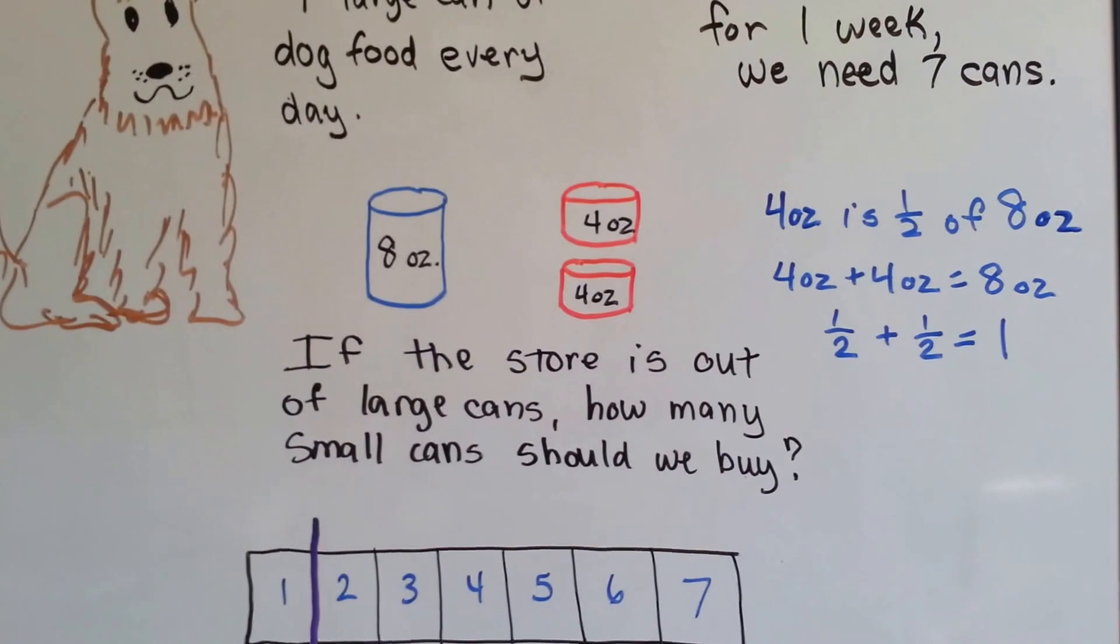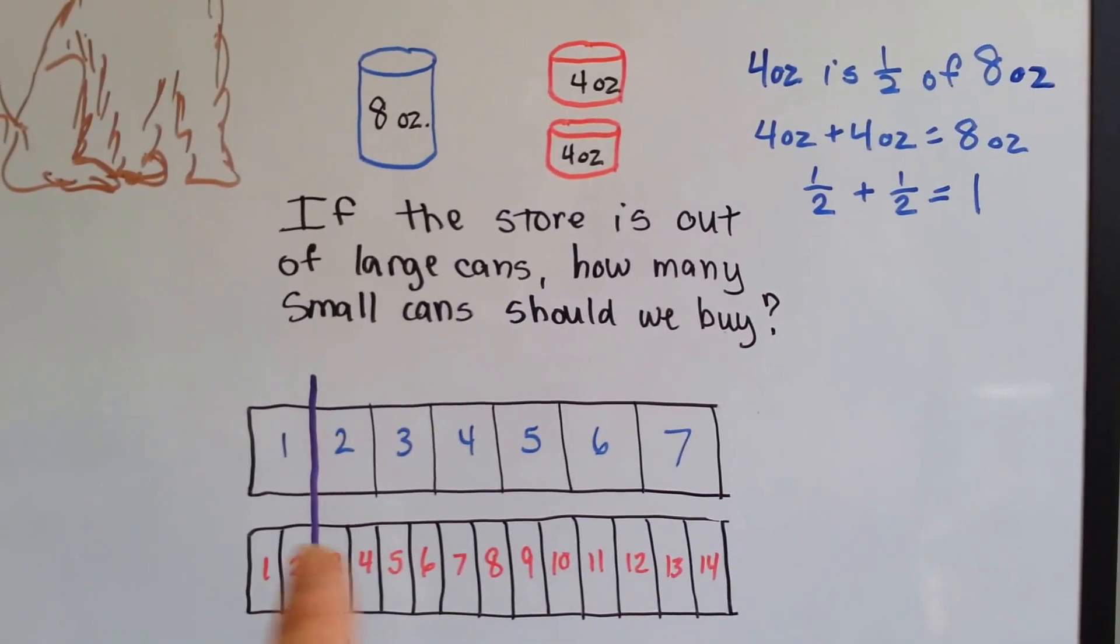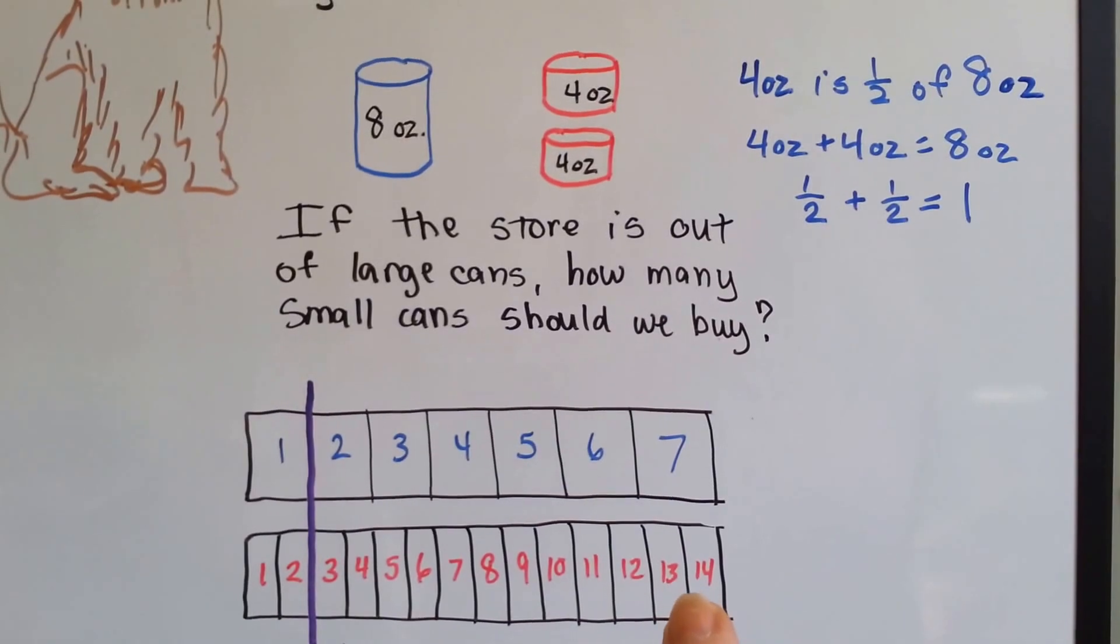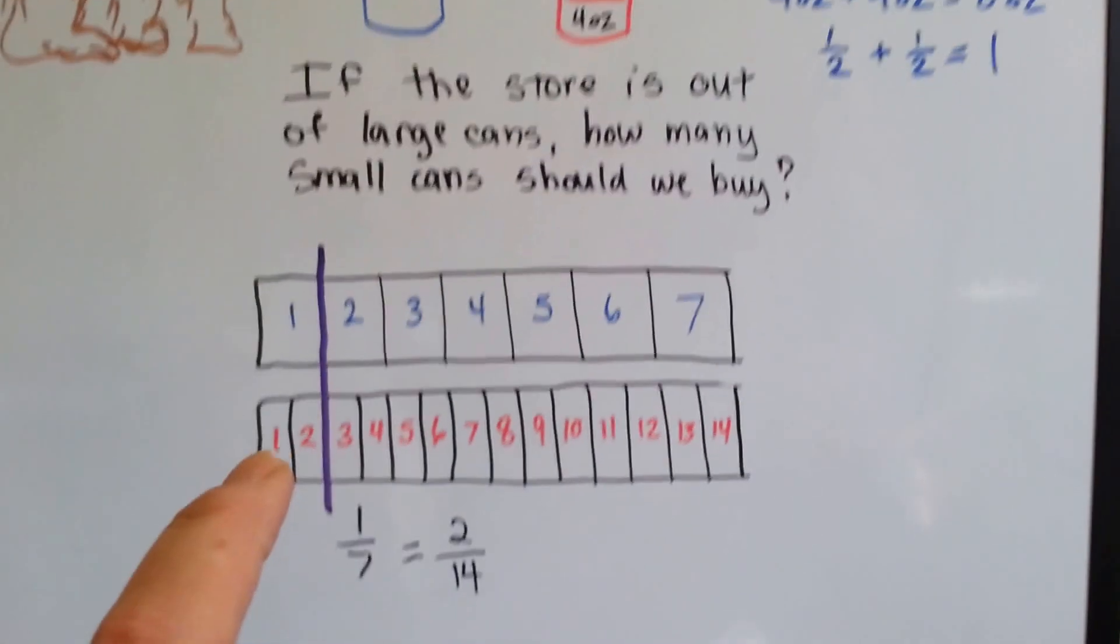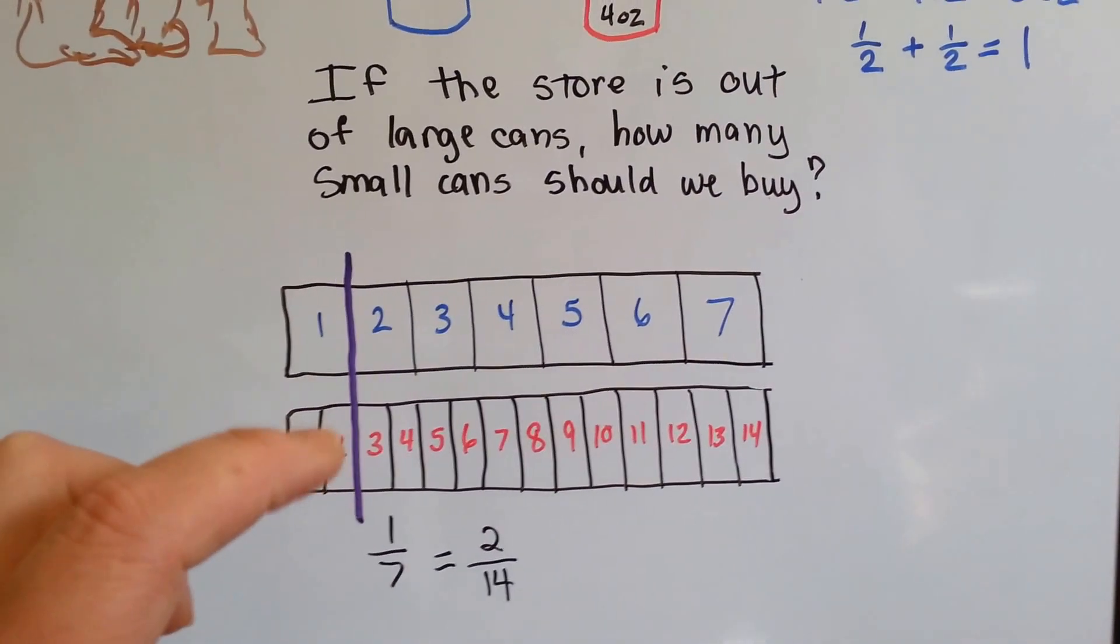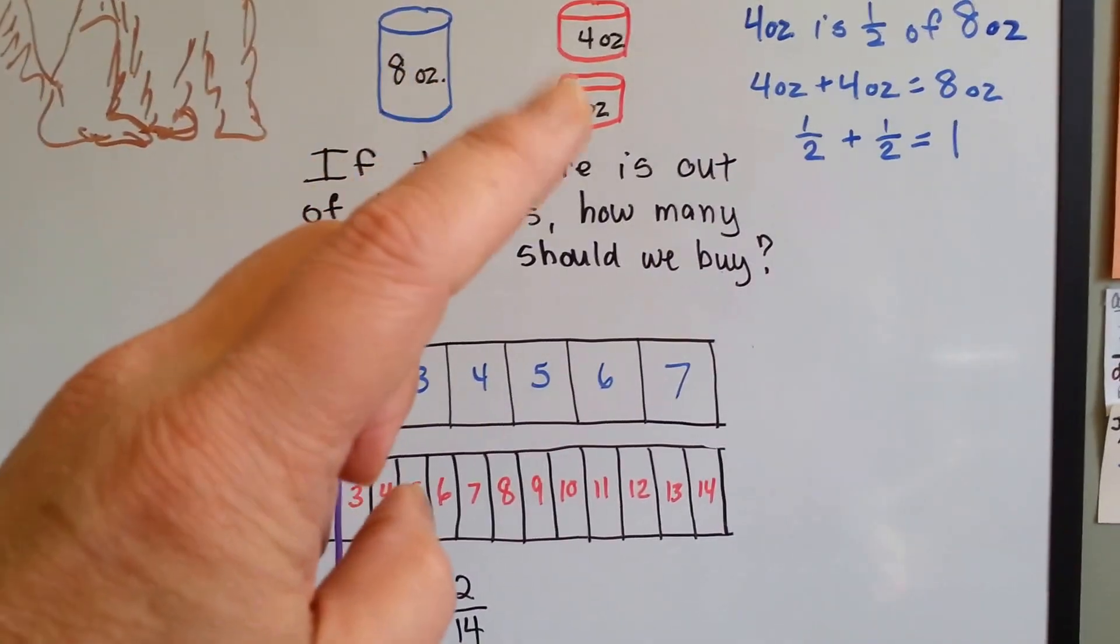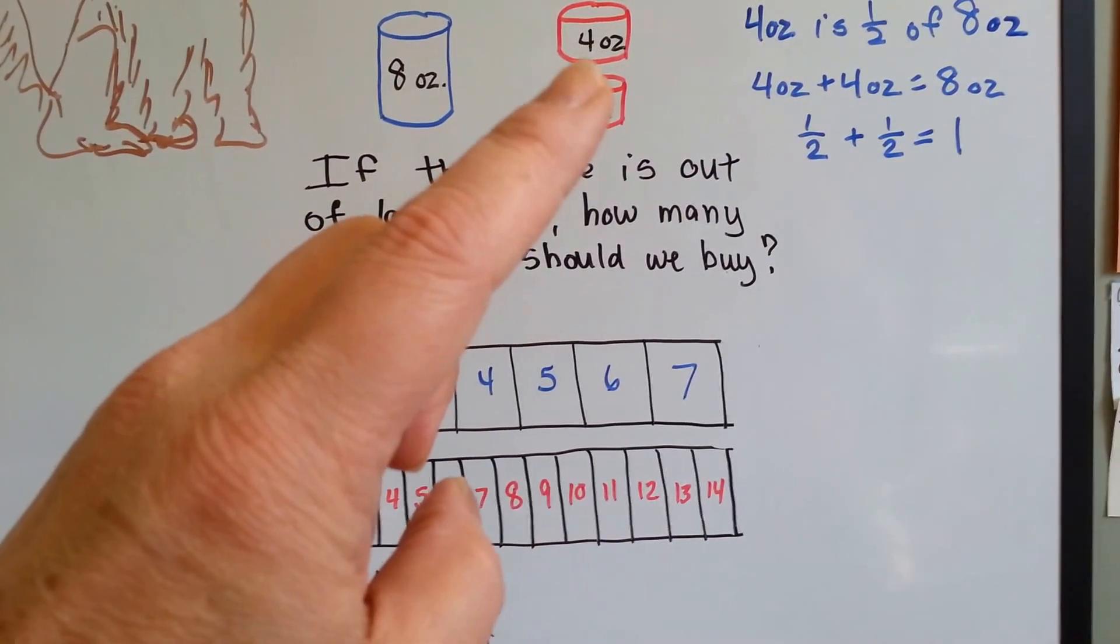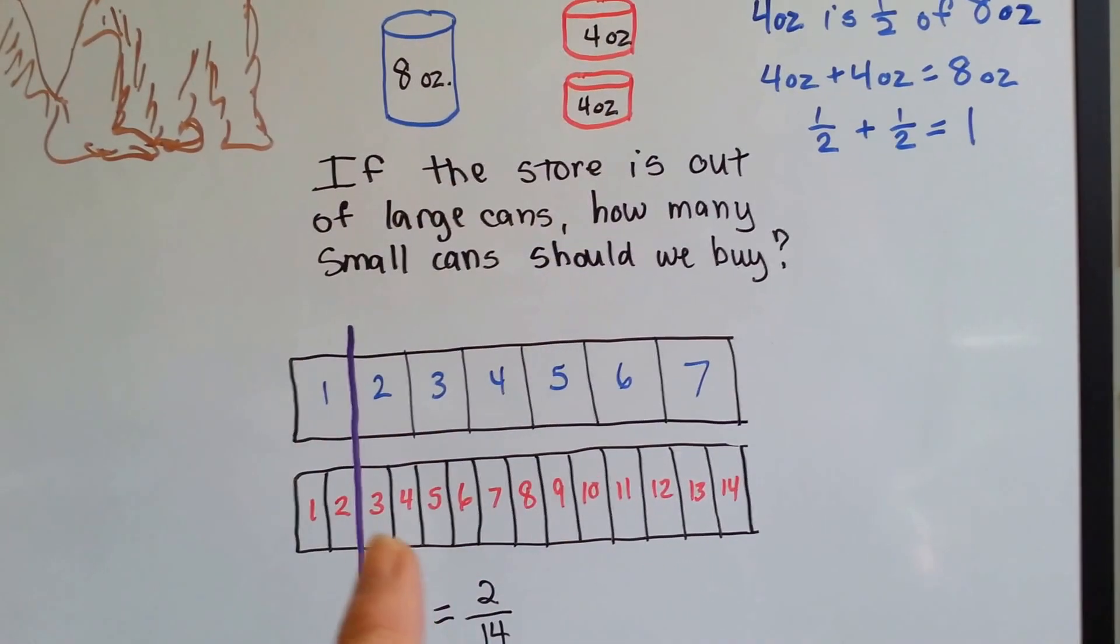So if she eats seven cans in a week of these big ones, how many of the little ones is she going to need? Well, she's going to eat 14 cans in one week because each one of these is two of these, right? One seventh is equal to two fourteenths. If she eats seven of these and we need to buy two for each one of those, we're going to get 14 of these, right? Because that's two times. She needs 14 of these.